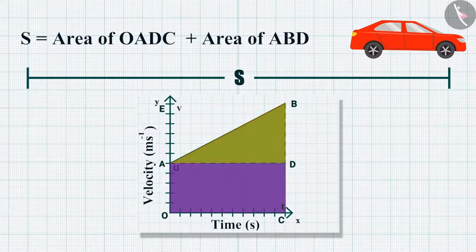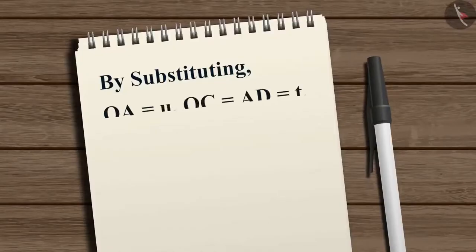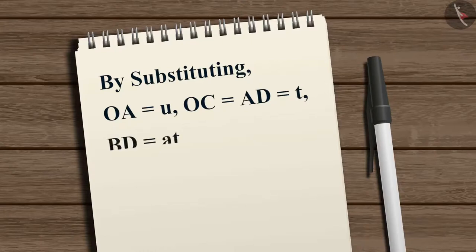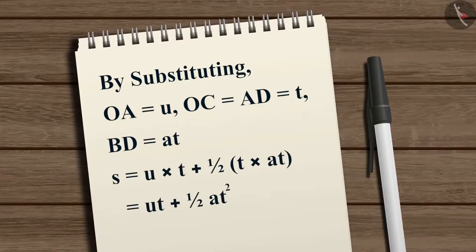That is S equals OA multiplied by OC plus one-half multiplied by AD multiplied by BD. Substituting OA equals U, OC equals AD equals T, and BD equals AT, we get S equals U times T plus one-half times T times AT, which equals UT plus one-half AT squared.